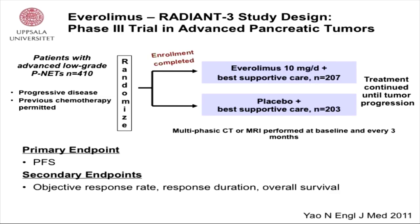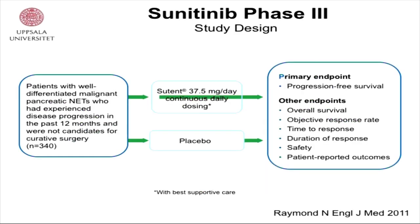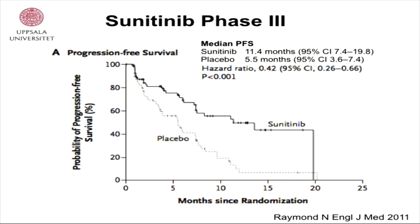This is the RADIANT-3 study of everolimus plus somatostatin LAR versus placebo plus somatostatin LAR in patients with pancreatic NETs, with a primary endpoint of progression-free survival. The result was a prolongation of PFS by about six months in the everolimus-treated patients, published in the New England Journal of Medicine in January 2011. Also in the same issue: sunitinib 37.5 mg per day compared with placebo in patients with pancreatic NETs, also showing a PFS prolongation of about six months in the active group.